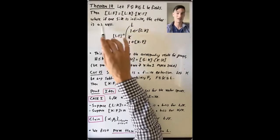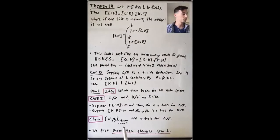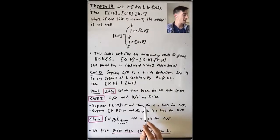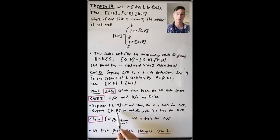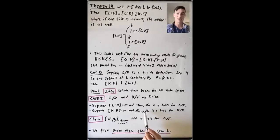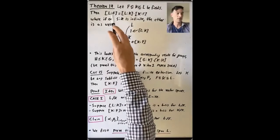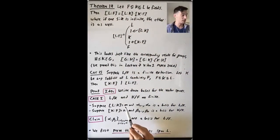We'll deal with the case where one side is infinite separately at the end. So let's suppose that the degree of L over K is m, and that α₁ through αₘ is a basis for L over K — meaning these are elements of L that are linearly independent and span L as a vector space over K. Let's also suppose that the degree of K over F is n, and that β₁ through βₙ is a basis for K over F — elements of K that are linearly independent over F and span K as a vector space over F.